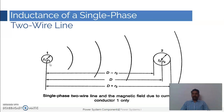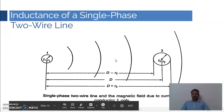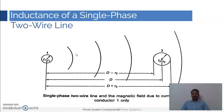This is conductor one whose radius is r1 and carrying current i1. Now we have the second conductor with radius r2 and carrying current i2. Let us try to calculate the inductance because of this two-wire line produced because of the currents i1 and i2.